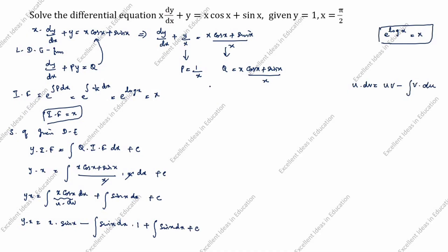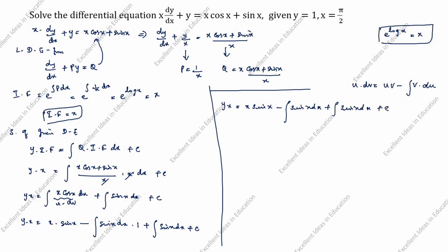yx = x sin x − ∫sin x dx + ∫sin x dx + c. The two ∫sin x dx terms cancel, giving yx = x sin x + c.